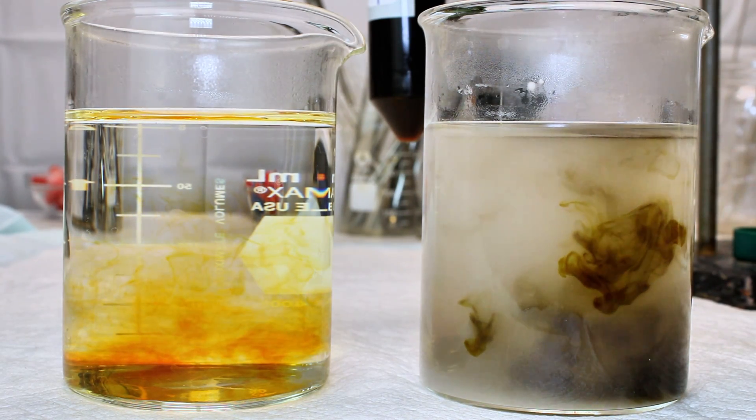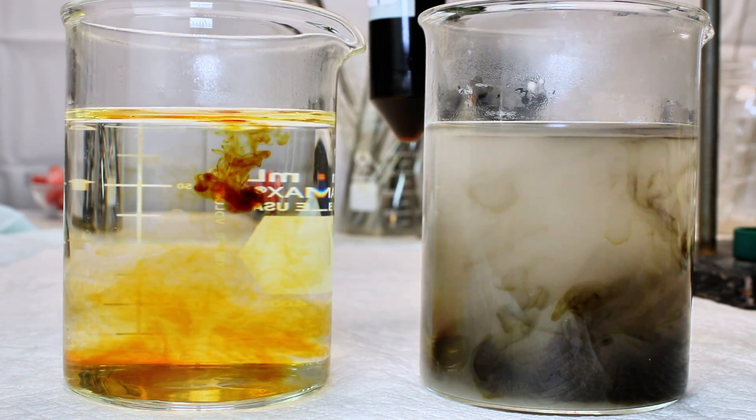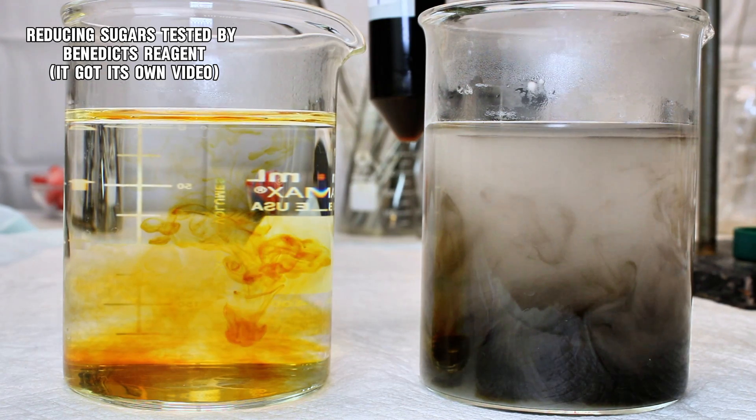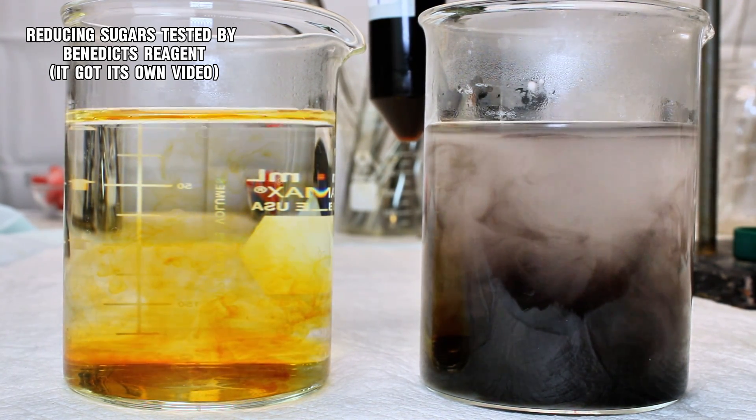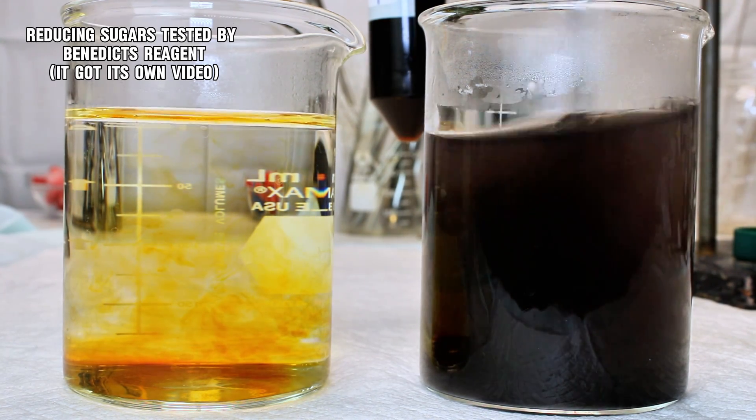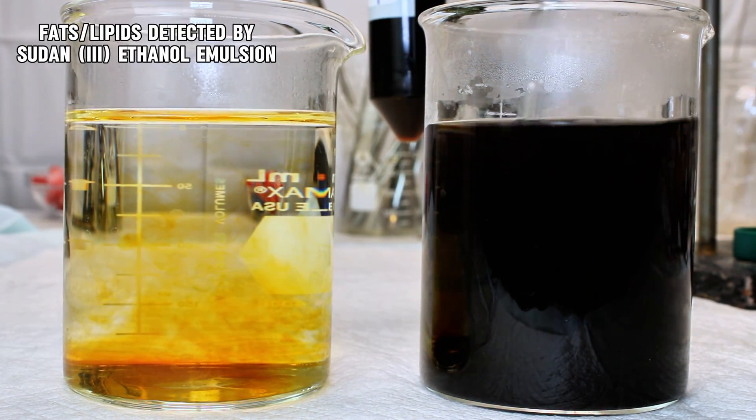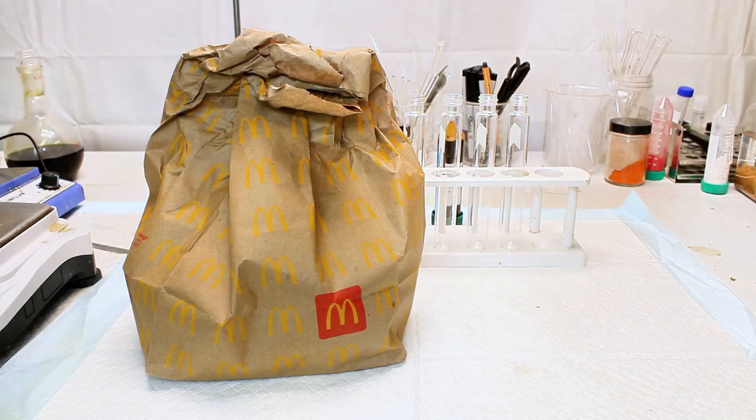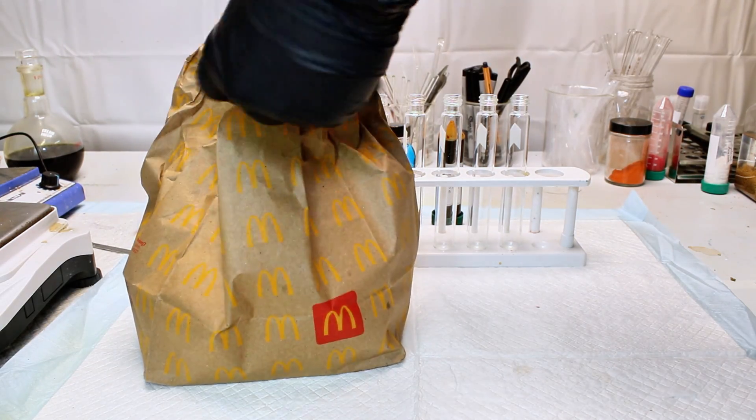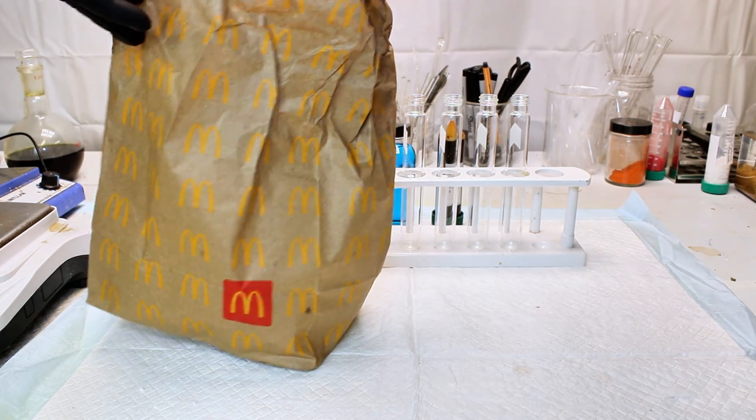To test for the presence of reducing sugars like glucose or fructose, I'm simply using some Benedict's reagent that I made in a previous video. I'll be sure to include a link to that video in the description. And to test for lipids, I'm simply using some Sudan-3 dye dissolved in absolute ethanol. Now that I had gathered all of my analytical reagents, it was time to analyze some food.